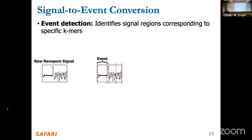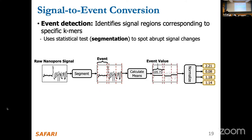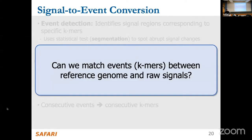How do we convert signals to events? We perform a statistical technique called event detection, which identifies signal regions corresponding to specific k-mers. These segmentation techniques are statistical tests to identify abrupt changes in the signal. We then calculate the mean within these segmentation points and normalize the values so they are comparable to those generated from the reference genome. This gives us consecutive events corresponding to consecutive k-mers.